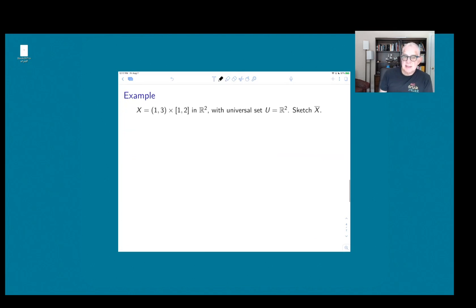Here's an example that comes from the plane. So X is the Cartesian product of the open interval (1, 3) with the closed interval [1, 2] in the plane, and the universal set is the plane. So this is good practice for us to draw another set like this, and this is the first time I think that we've looked at one where we've looked at one where it's an open interval.